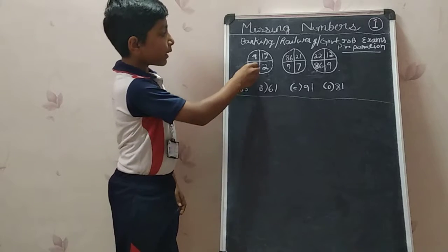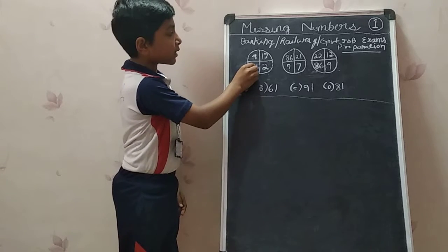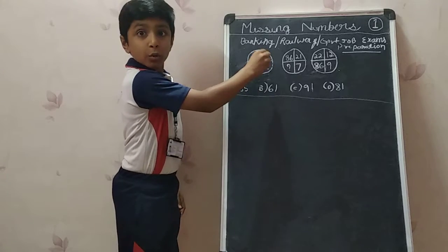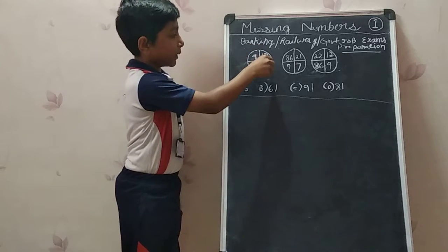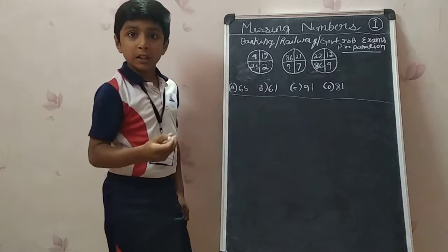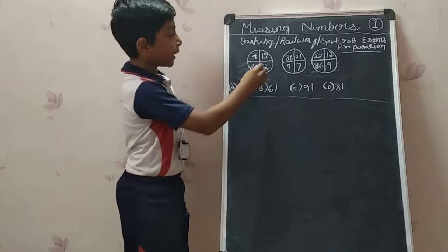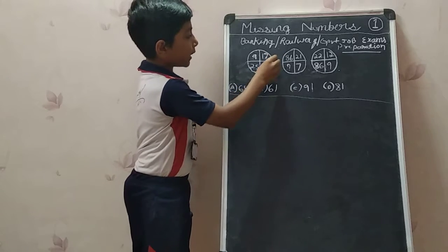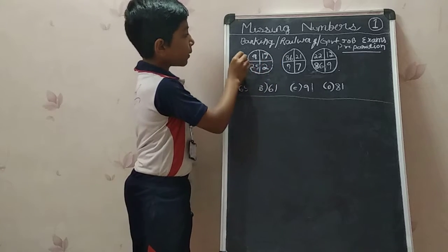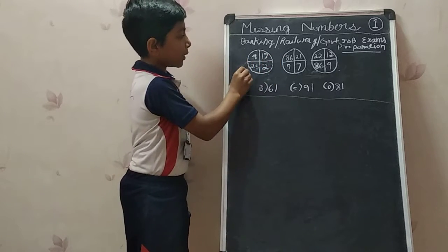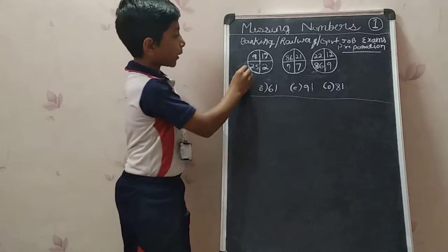So we have to find this number by using these 3 numbers. First let us try adding: 17 plus 19 plus 9 equals 28. It is not coming.